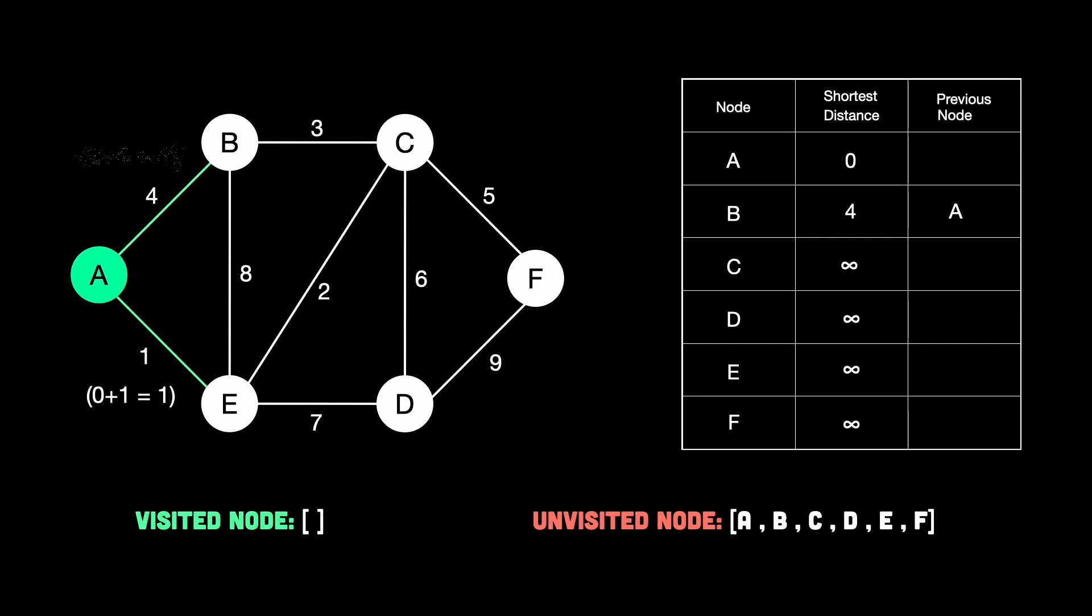Alright, pretty simple. Now, similarly, the distance from A to E is 1. So we apply the same logic. The total distance is 0, which is A's distance, plus 1, which is equal to 1. Then we update the shortest distance for E to 1 in the table. And again, we remember that E came from A, so previous node of E is A. Then there's no other neighbors of A, so we're done with this step. We now mark A as visited. Meaning, shortest distance to A is final, and it's never changing again.